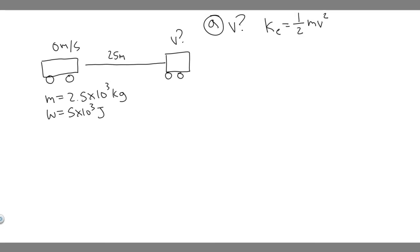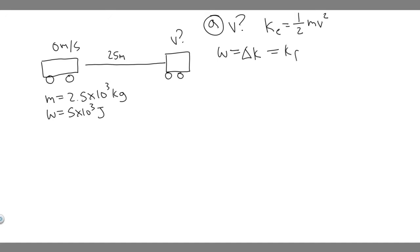There's another thing you need to know, which is about work. The work done is equal to the change in kinetic energy. So if we know that work equals the change in kinetic energy, and kinetic energy equals one-half MV squared, we can solve for V. Work equals the change in kinetic energy, which is the final kinetic energy minus the initial kinetic energy.